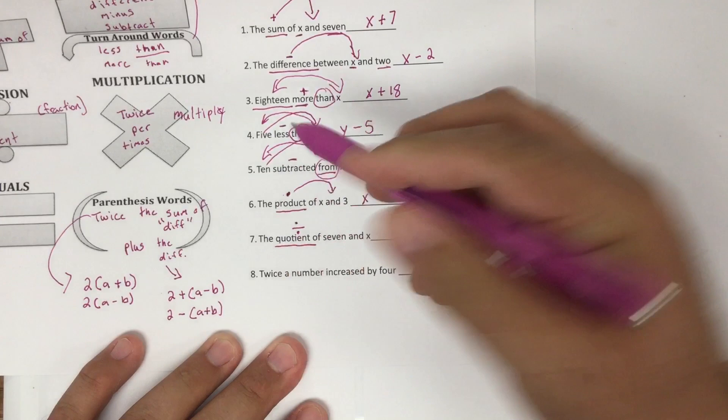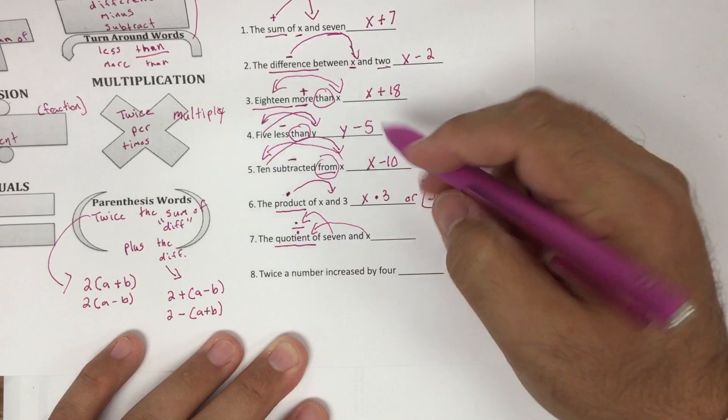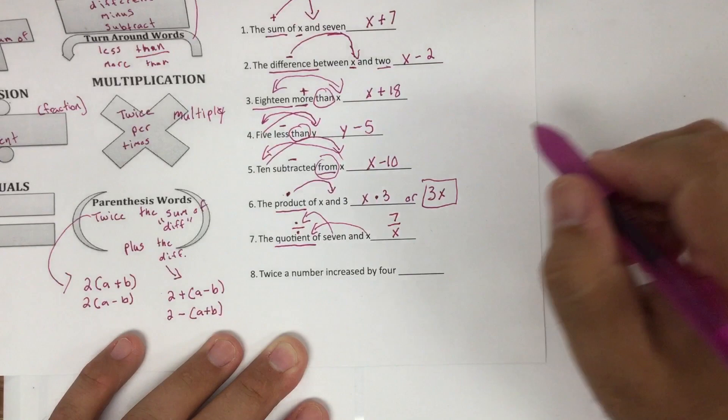The quotient. Quotient means to divide. Now look at here. The division symbol looks like a fraction. So that's exactly what we're going to write this as. Notice the seven goes on the top and the X is going to go on the bottom in this situation. So the quotient of seven and X.